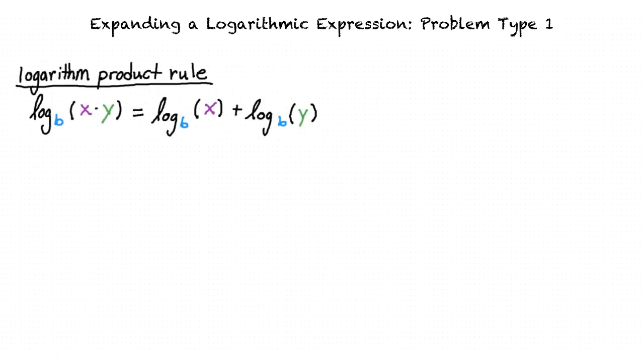The logarithm product rule says that the base b logarithm of x times y is equal to the base b logarithm of x plus the base b logarithm of y.